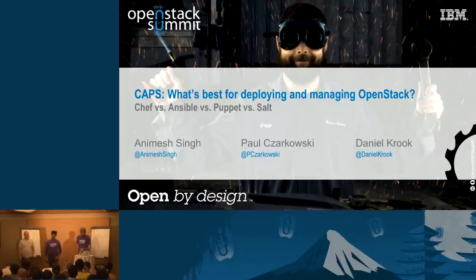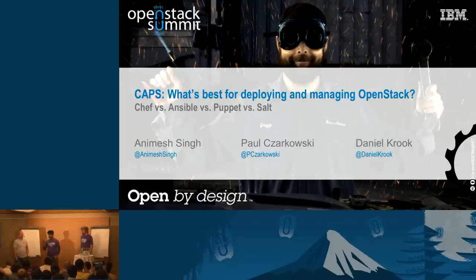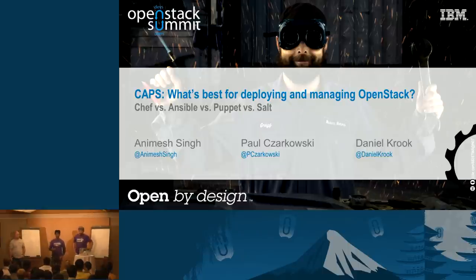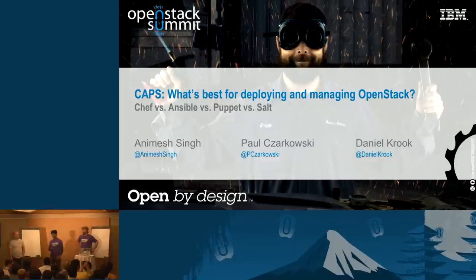Hello, everyone. Thanks for joining. My name is Animesh Singh, and these are my colleagues, Daniel Crook and Paul Zakowski. Today we are going to talk about Chef, Ansible, Puppet, and Salt, more so in the context of OpenStack.